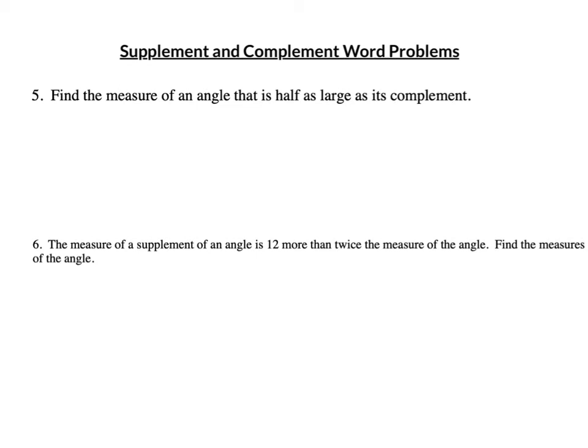Number 5: Find the measure of an angle that is half as large as its complement. Looking for that "is" — there's my equals. Find the measure of an angle — that's my x. That is, x equals half as large. I'm going to take half of something — multiply by one-half, or divide by two. Half as large as its complement, which is 90 minus x.